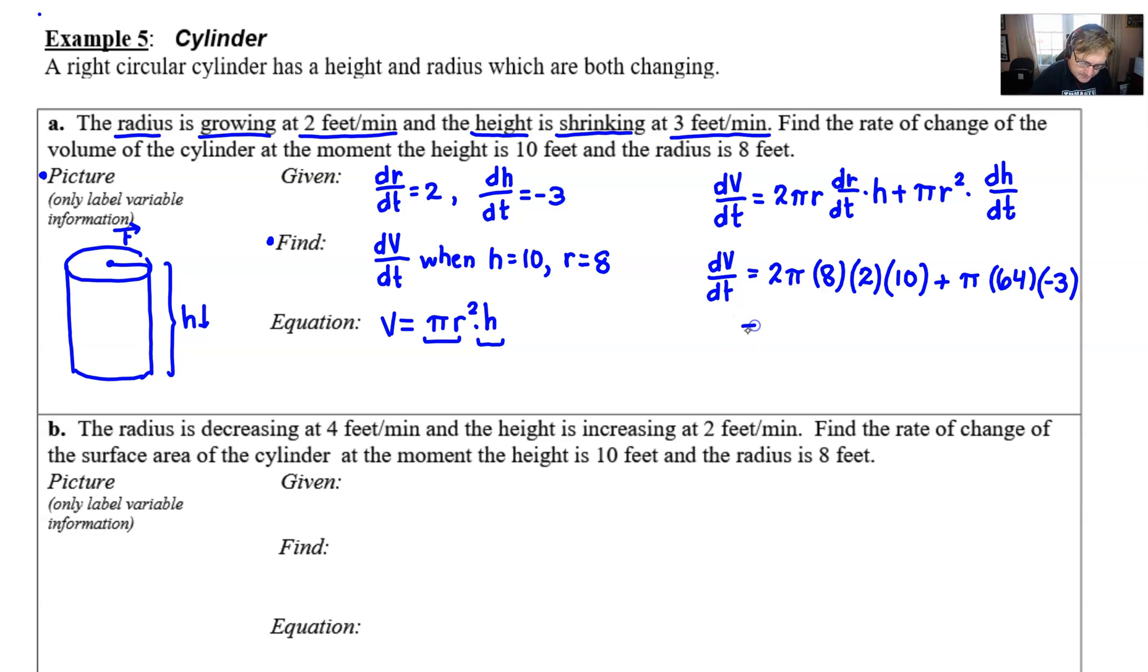So now we just simplify a little bit. Let's see, 8 times 4 is 32 times 10, that would give us 320 times π. 64 times 3, that would be 192. Because it's negative we're going to subtract it. So 320 minus 192, well 320 minus 200 would be 120, but we're going to have to subtract 8 more. So that's going to give us I believe 112π and it would be positive.